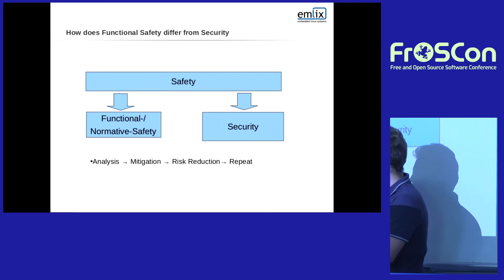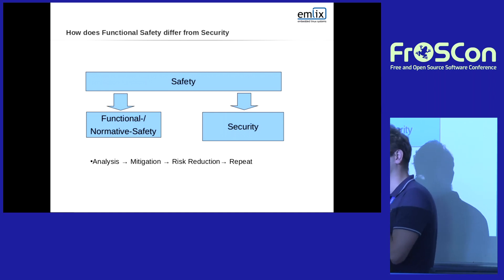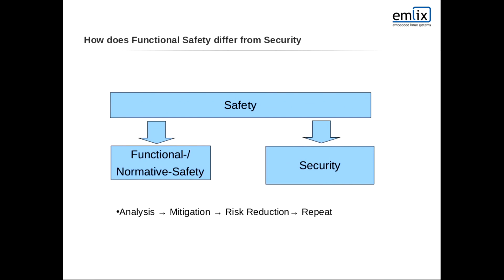Functional safety works with repeating patterns and processes. The central bit, which we'll come back to repeatedly, is: analyze your risk, decide whether to mitigate it or accept it as tolerable, reduce risk, and repeat. Eventually you reach an acceptable level and get the seal of approval. Different norms have different risk gradings — in automotive that's ASIL levels, in IEC norms it's SIL levels — and higher levels require more mitigation work.